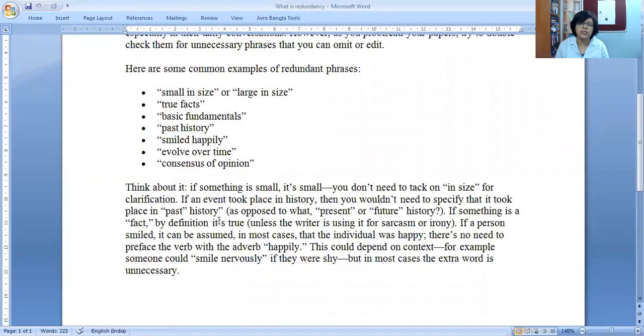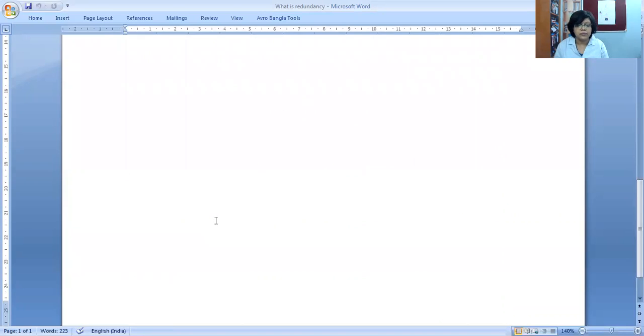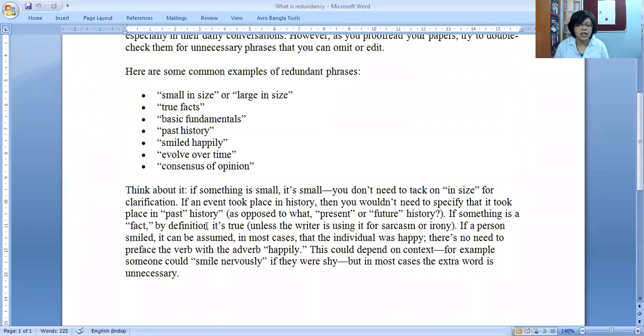Consensus of opinion. Consensus means opinion which has been supported by most of the people. These are certain things that are there, like past history. Past and history - it's something in the past.